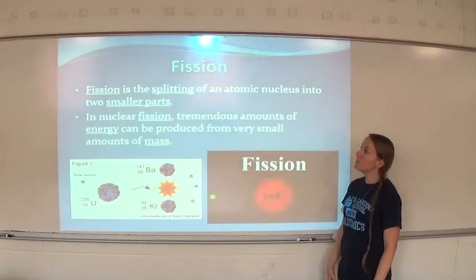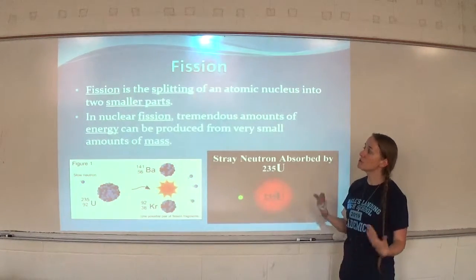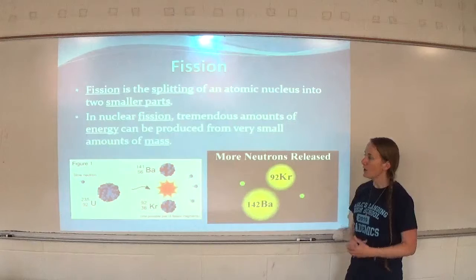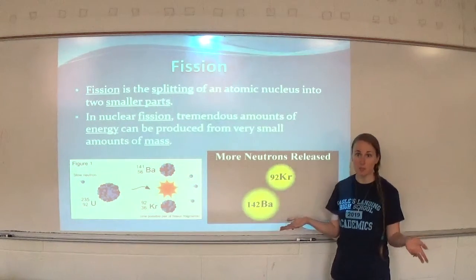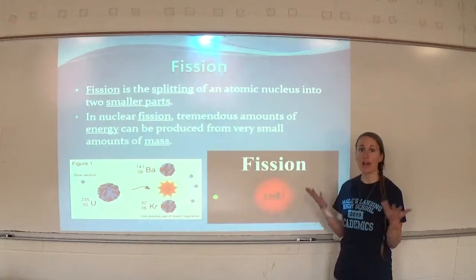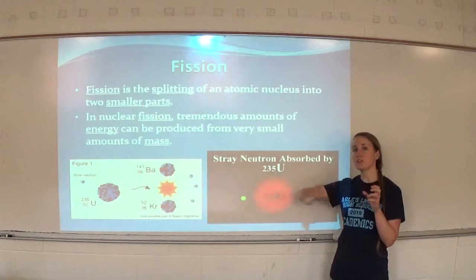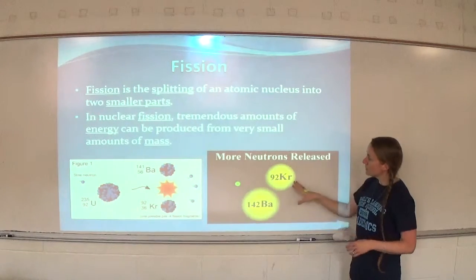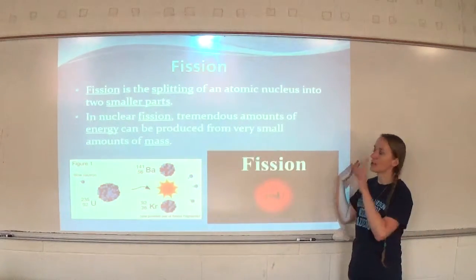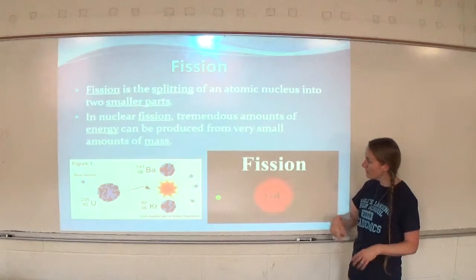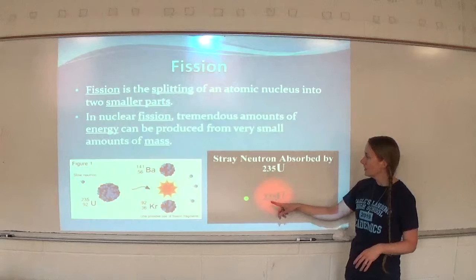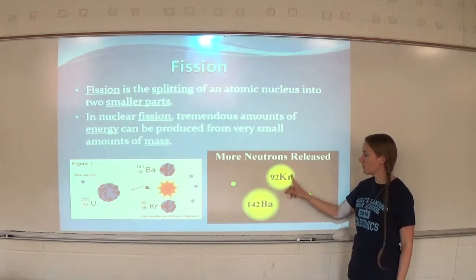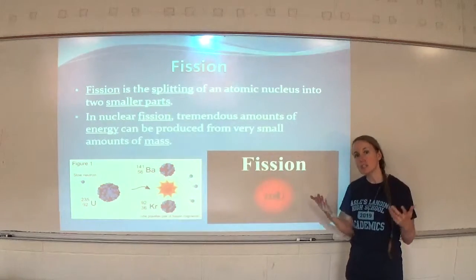Fission is the splitting of an atomic nucleus into two smaller parts. In nuclear fission, tremendous amounts of energy can be produced from very small amounts of mass. For example, in alpha decay, the nucleus releases an alpha particle, losing two protons and two neutrons, making a smaller nucleus. Here's an example where a neutron is absorbed by a uranium atom, and then it splits into two different atoms — krypton and barium — because that nucleus is just too large to be stable.